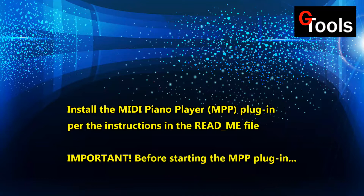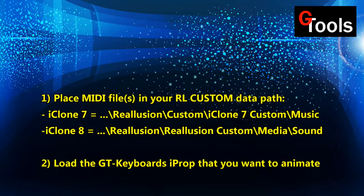The first thing you're going to want to do is install the MPP plugin per the instructions in the README file. There are a couple of things you want to do before you start the plugin: one is to put the MIDI file in your Reallusion custom data path — you can see them there on the screen for the different versions. Also, you want to load in the G-T Keyboards iProp that you're going to animate.